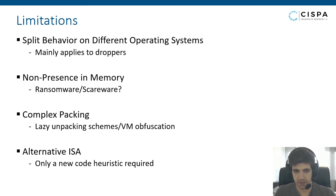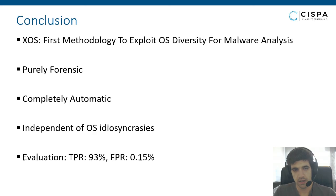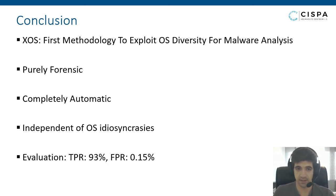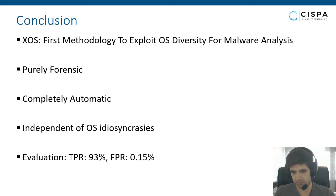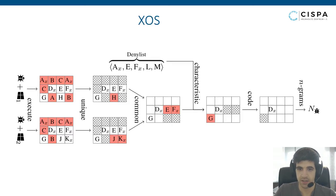Regarding alternative instruction set architectures — that's not really a limitation, because adding support for a new ISA is merely an engineering effort. For example, if you want .NET bytecode, you just add a disassembler for .NET bytecode and write a new code heuristic. To conclude, I have presented ExoASIC with cross-OS execution — the first methodology to exploit OS diversity for malware analysis. It works in a purely forensic setting, is completely automatic, and is independent of any OS or hardware idiosyncrasies. We achieved a 93% true positive rate and a 0.15% false positive rate, showing the approach is feasible in practice.